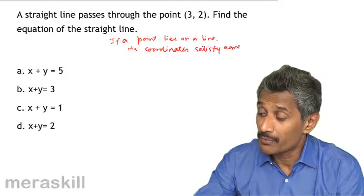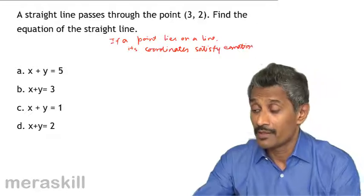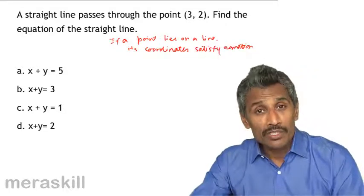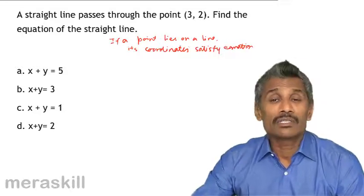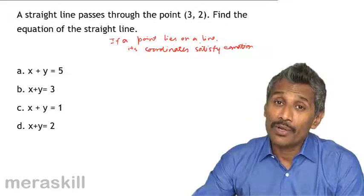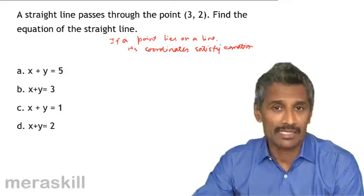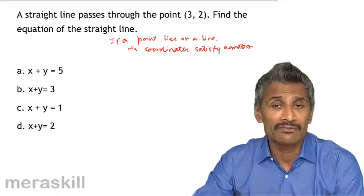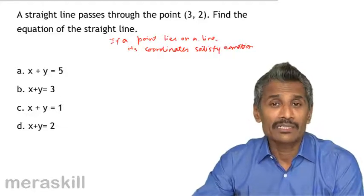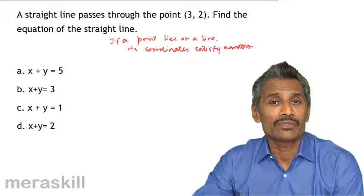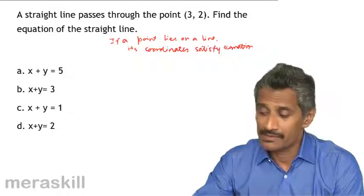This is very, very important because it's this way. If the coordinates of a point satisfy the equation, then the point lies on the line. If the point lies on a line, its coordinates have to satisfy the equation. Because the equation itself means a mathematical condition which every point on that particular line satisfies.